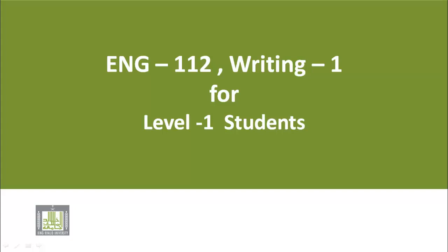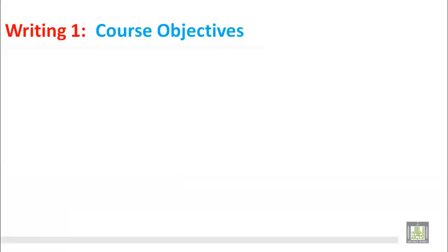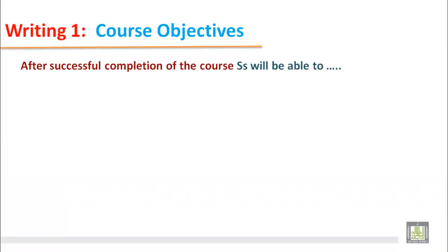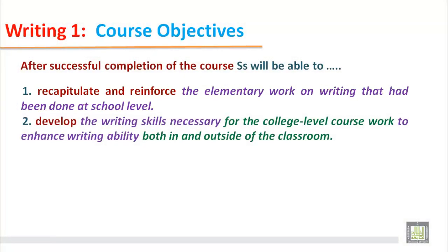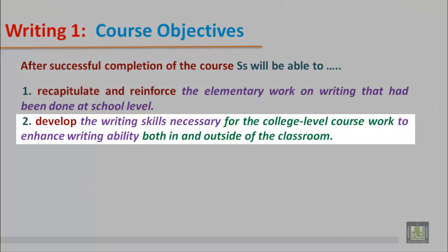English 112, Writing 1 — a course for level one students. Course objectives: after successful completion of the course, students will be able to recapitulate and reinforce the elementary work on writing done at school level, and develop the writing skills necessary for college level coursework, enhancing writing ability both in and outside of the classroom.